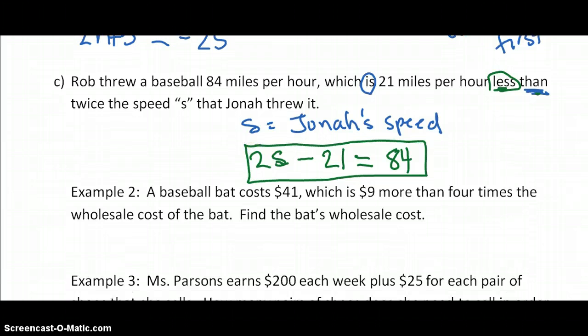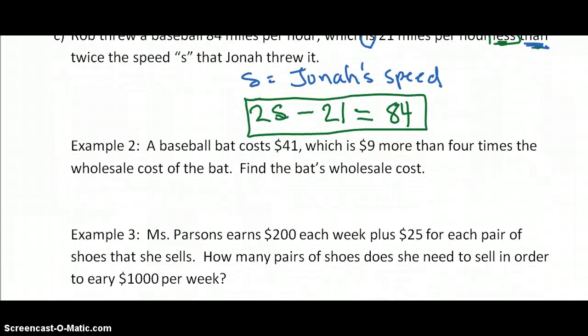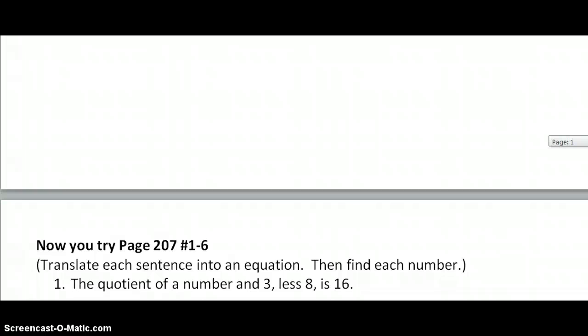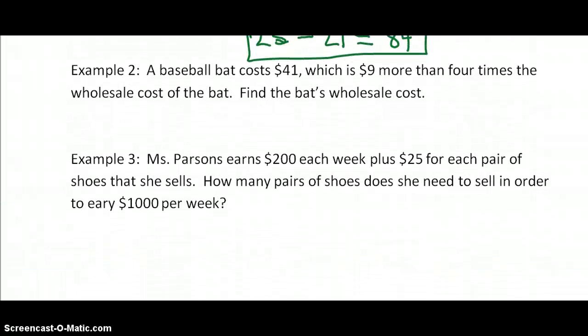Now let's read the next example. Example two. A baseball bat costs $41, which is $9 more than four times the wholesale cost of the bat. Find the bat's wholesale cost. So this is what we're looking for, and this one says to find it. So we're going to actually have to solve this equation. So let's highlight the important words there.